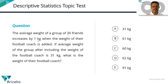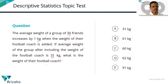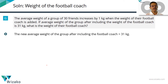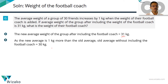How many friends are there? Initially 30 friends. If the average weight of the group after including the weight of the football coach is 31 kgs, what we need to find out is the weight of the football coach. The new average weight including the football coach is 31, which is 1 kg more than without the coach, so the average weight without the football coach is 30 kgs.